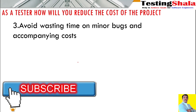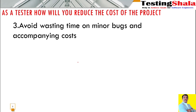The third important aspect in reducing the overall cost of the project is we want to avoid wasting our time only on focusing on minor bugs and associated costs. For the minor bugs we find, even the cost of fixing is very high, and they don't add much value to the overall project. We don't want to spend too much time identifying only minor bugs and having developers keep fixing those. That is not our ultimate goal — our ultimate goal is to find major and critical bugs.